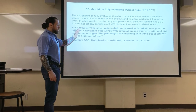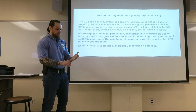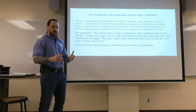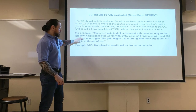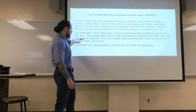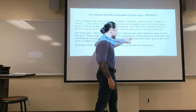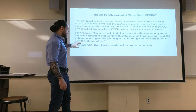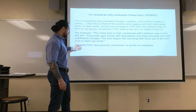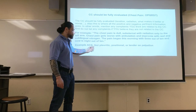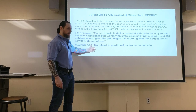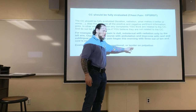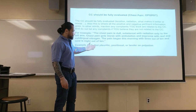For example: '65-year-old male, past medical history of hypertension, coronary artery disease, diabetes, and stents, presents with one hour of chest pain that began at 8 in the morning. Upon assessment, the chest pain is dull, substernal, with radiation to the left arm. Chest pain gets worse with ambulation, improves with rest and sublingual nitroglycerin. Pain began at 3 out of 10 and is now 8 out of 10.' If pain is not pleuritic, positional, or reproducible with palpation, it's more likely acute coronary syndrome.